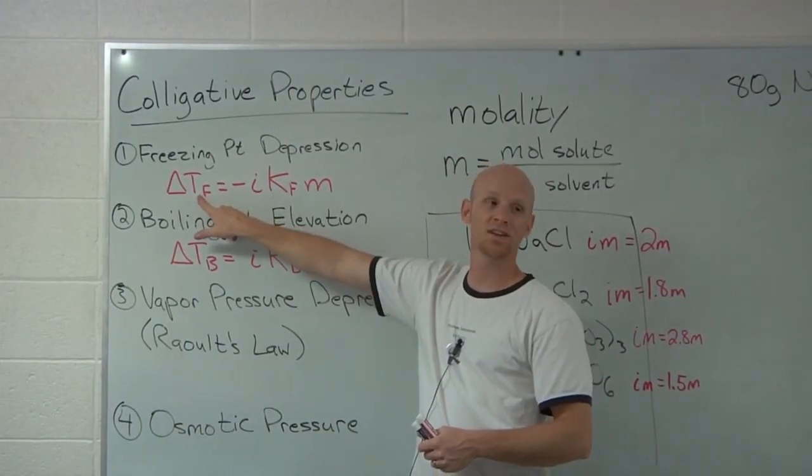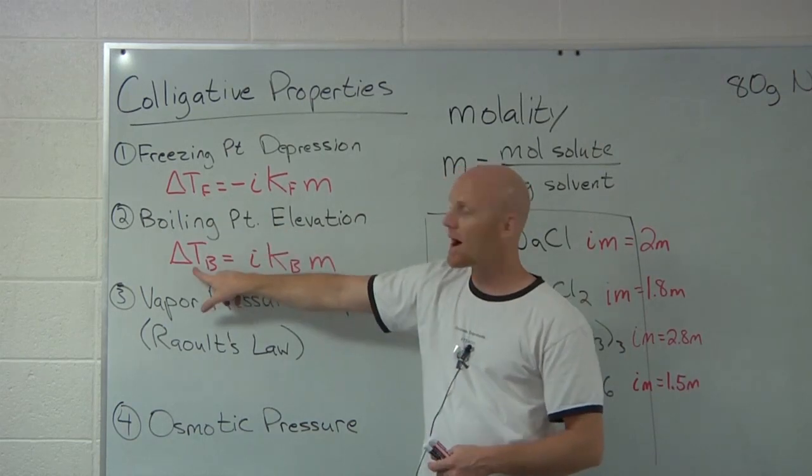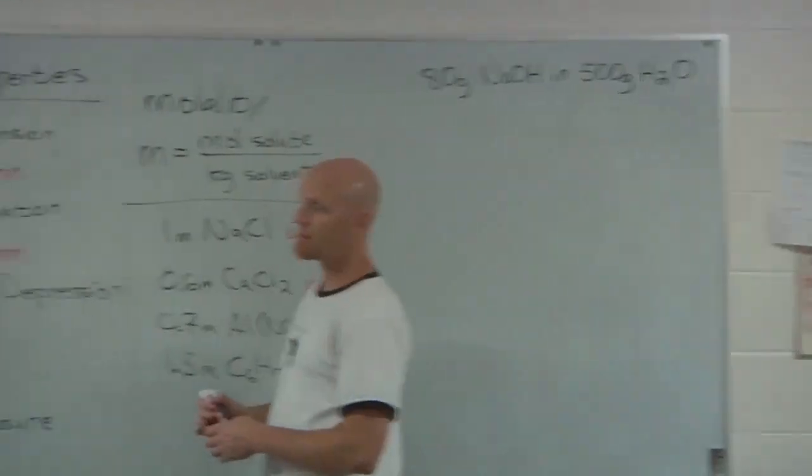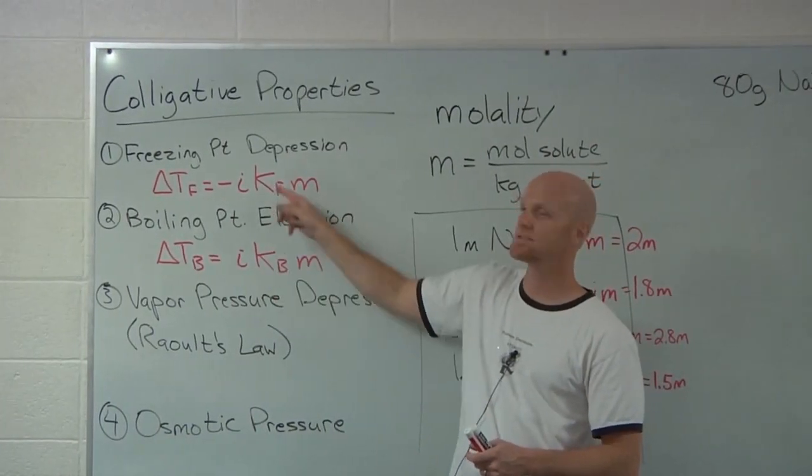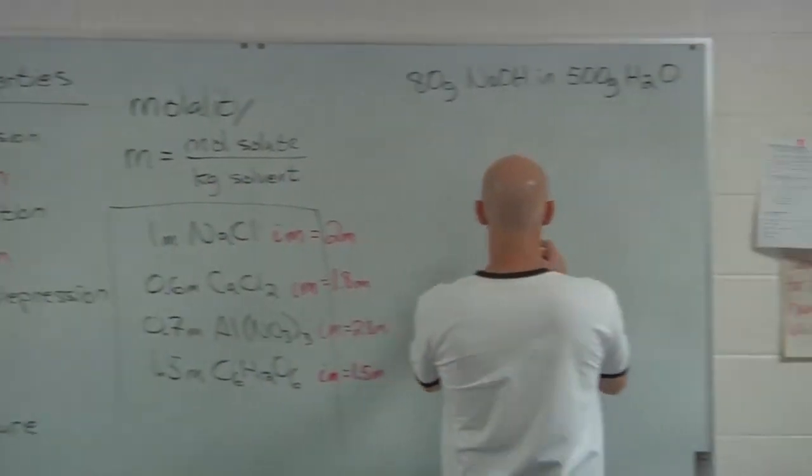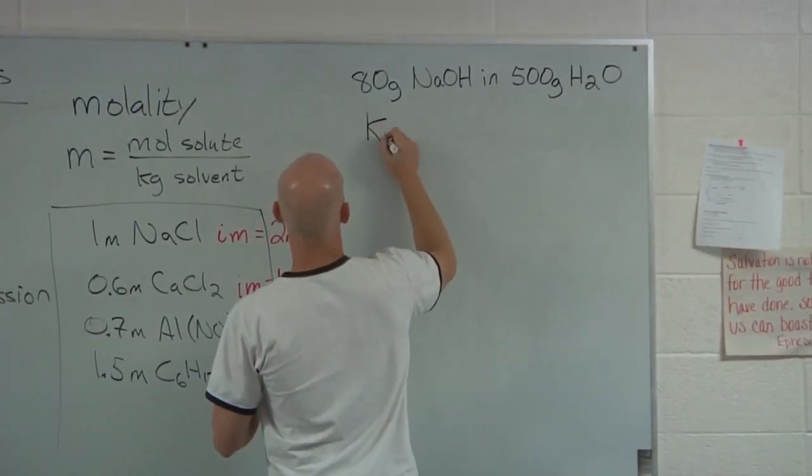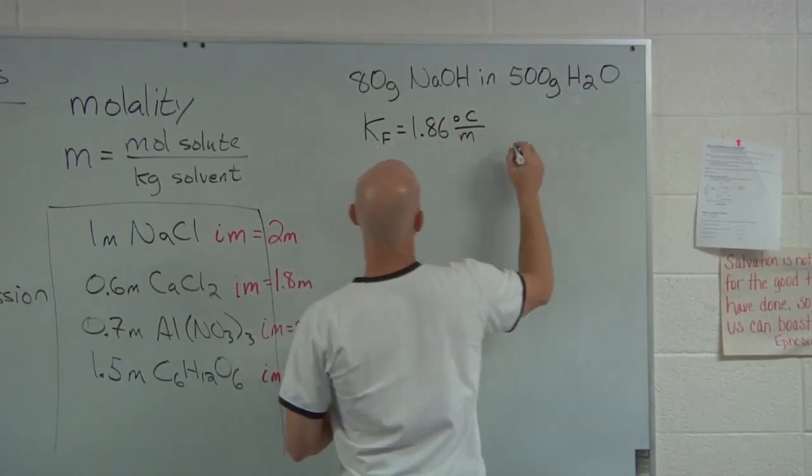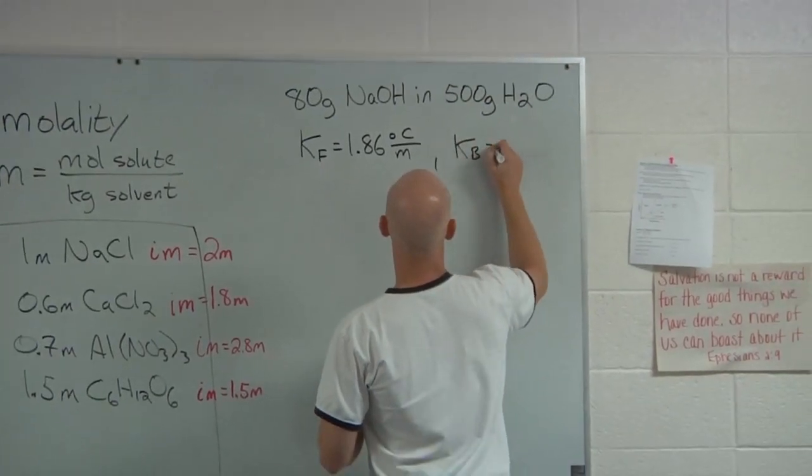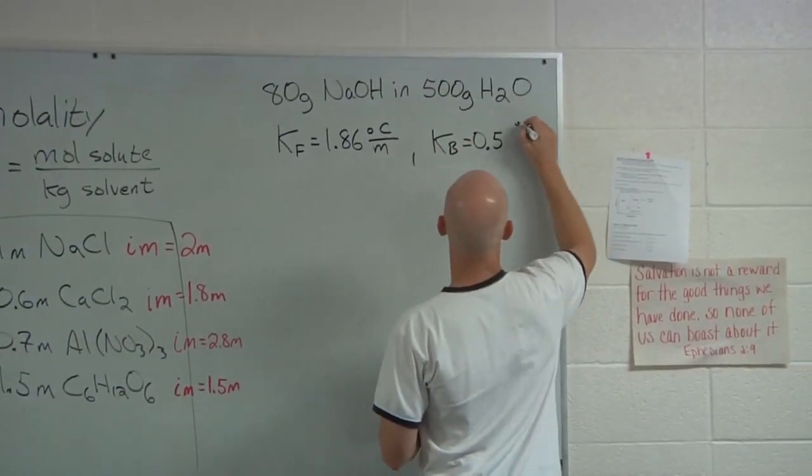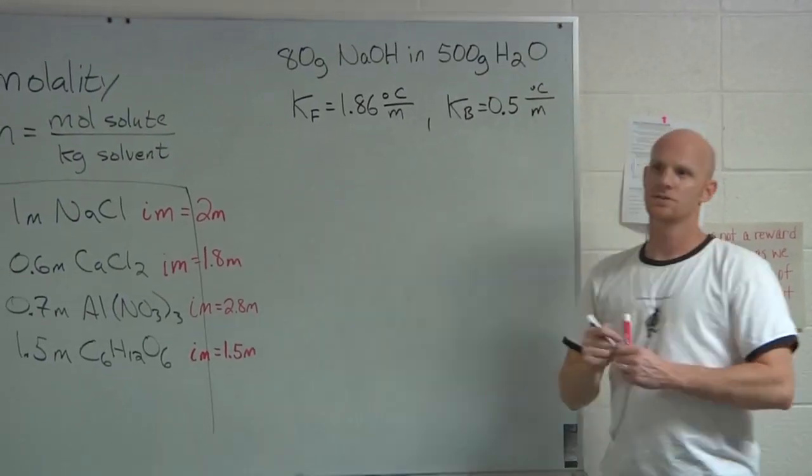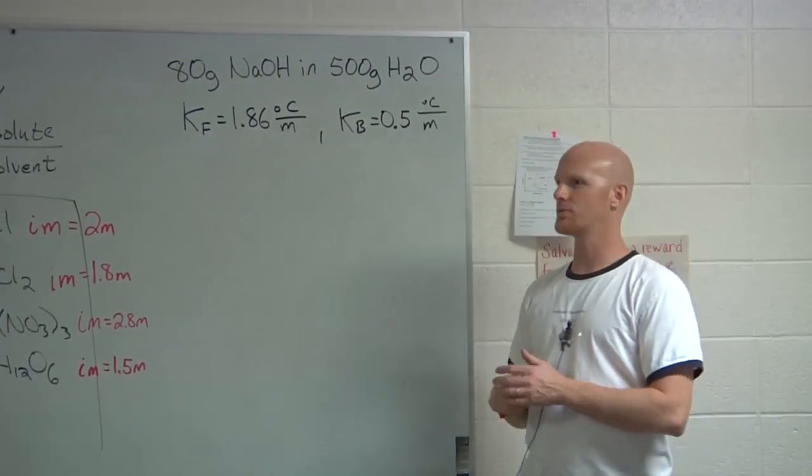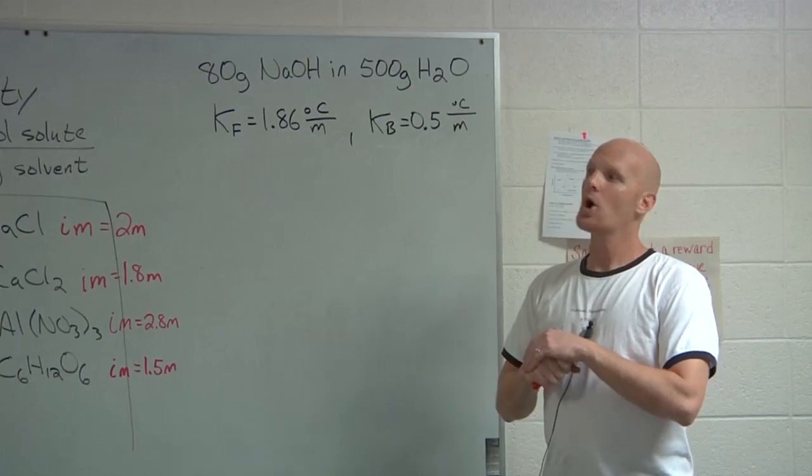And so we're going to see how far away from zero we are for the freezing point and how far away from 100 degrees Celsius we are for the boiling point. So, for you to be able to answer this question, I need to give you two more pieces of information, the constants. The freezing point constant for water is 1.86, and the boiling point constant is 0.5. So two different constants. And every different solvent tends to have its own set of constants. They typically have to be provided for you.